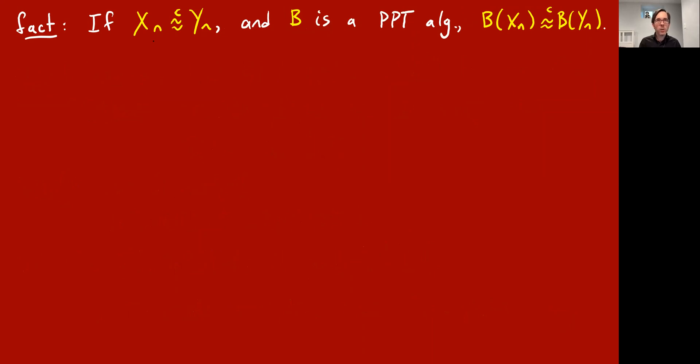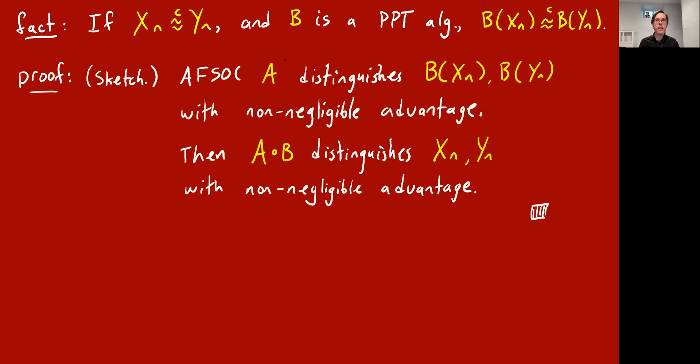Let me tell you one more basic fact about computational indistinguishability, which will only be important. Let's say X and Y are computationally indistinguishable ensembles. And B is a fixed algorithm, even a probabilistic algorithm. And you might imagine that B takes as input a string and outputs a string. And now you might say, let me consider B applied to XN. The output string you get, which is still a random string. If you take a random string X and plug it into B and run B and let B output something, that's a new ensemble, B of X. And B of Y is a new ensemble. And the fact is that these ones are still computationally indistinguishable. So computational indistinguishability is preserved under applying the same algorithm to both ensembles. And I was going to ask you to think about why that's true, but let me just put up a sketch.